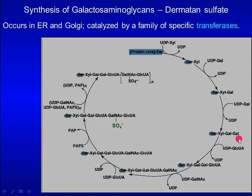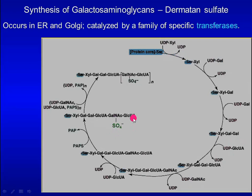This is followed by sequential addition of acidic and amino sugars. In this process, chain modifications occur. The first modification is addition of a sulfate group to N-acetylgalactosamine. Some glucuronic acid residues are converted to iduronic acid residues.